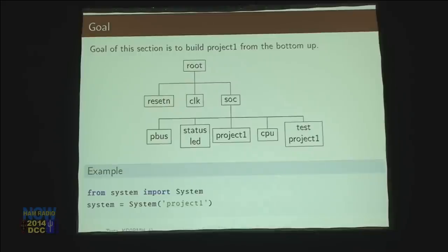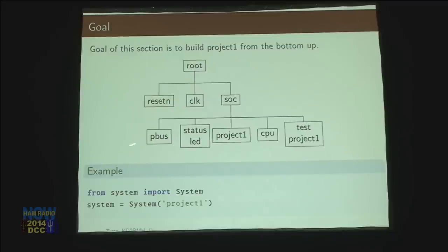The goal of this section is to build each part of project 1 from the bottom up. This is my tree diagram of our first project, so there's not too many things to worry about. We have a root, a reset button, a clock, the system on a chip with some peripherals, some lights, our project that we're going to work on, a little processor, and the test, kind of like a unit test that we're going to build.